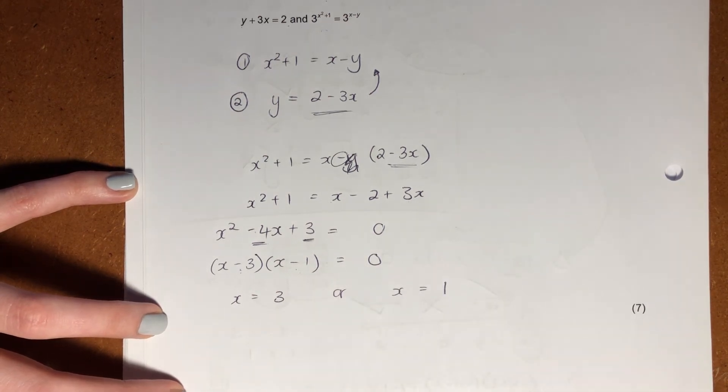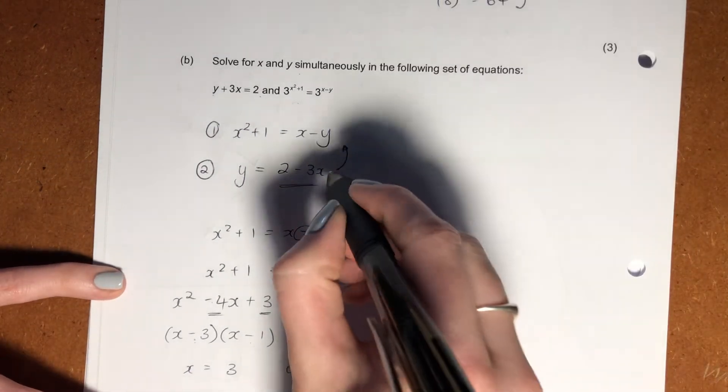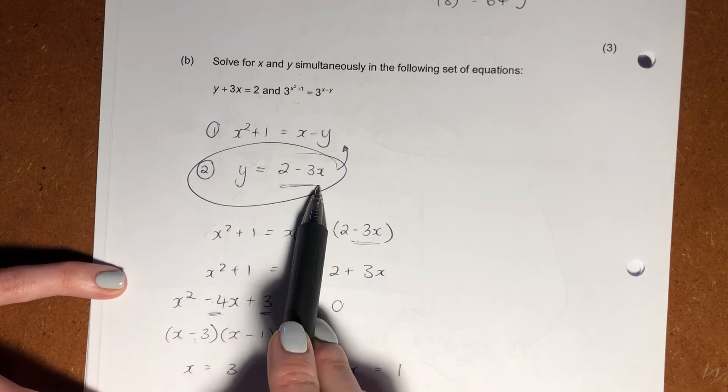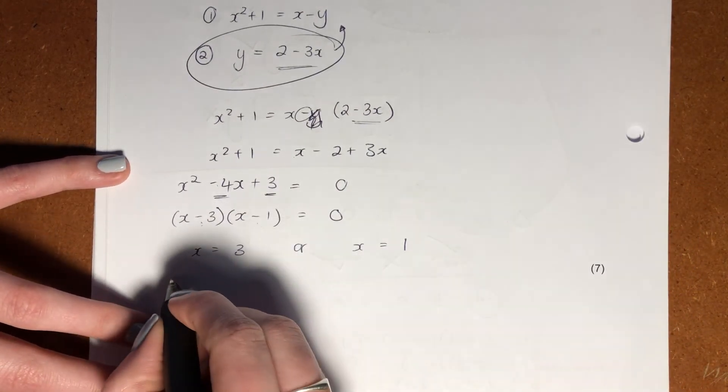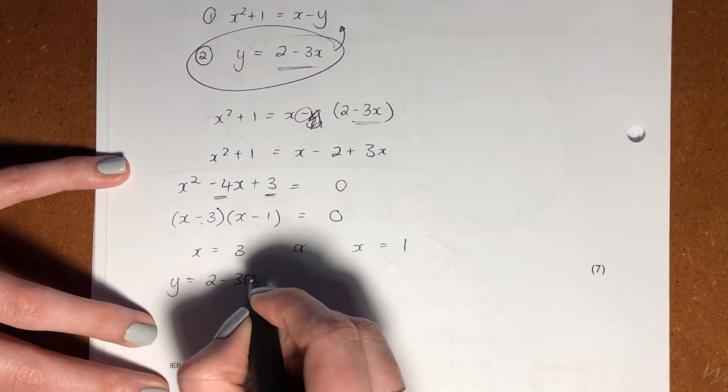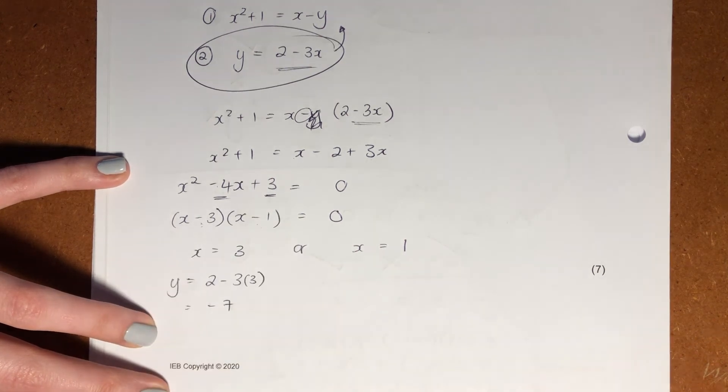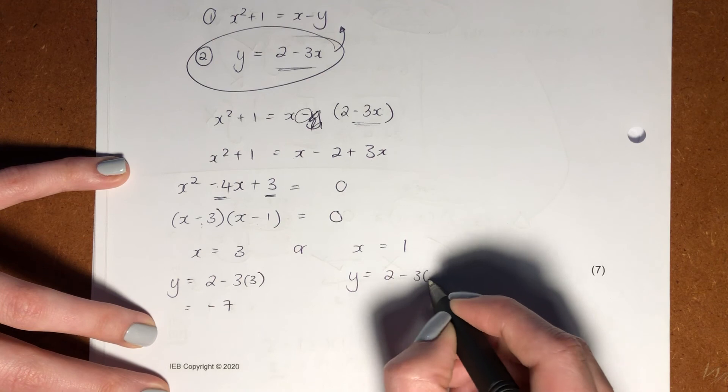So x can equal 3 or x can equal 1. But we're not done yet. We have to go solve for y. So what we're going to do is we're going to go back to equation 2 because we know that y can be figured out if I have x. And we're going to solve that for each of these. So y is going to equal 2 minus 3 times 3, which will be minus 7 if x equals 3. If x equals 1, this would be our answer.